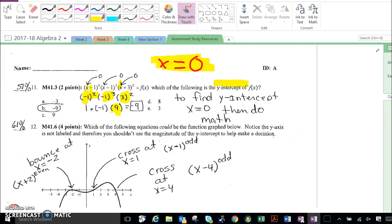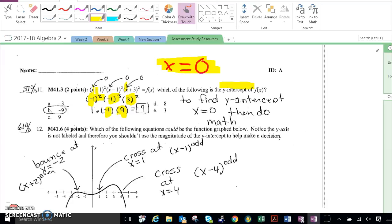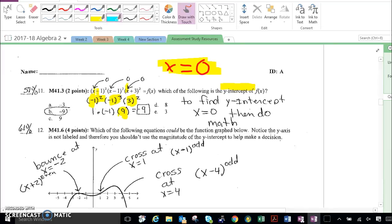3 squared is 9, negative 1 cubed is still negative 1, because it's negative 1 times itself 3 times. And negative 1 squared is 1. So 1 times negative 1 times 9 is negative 9. That's our final answer, B.